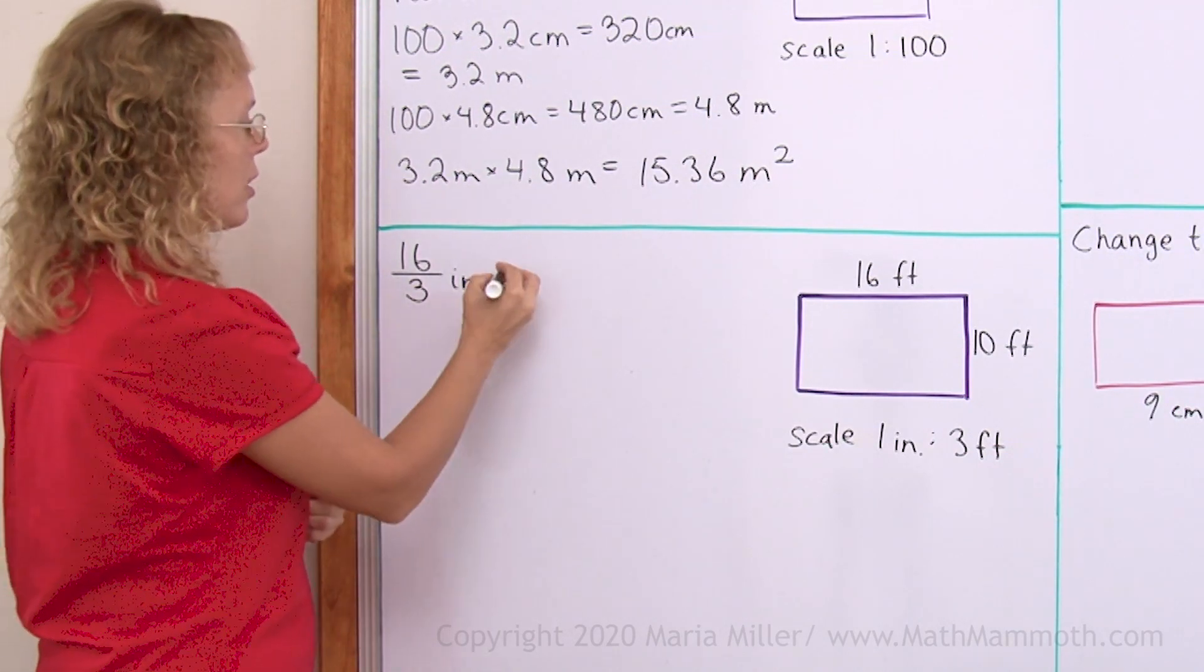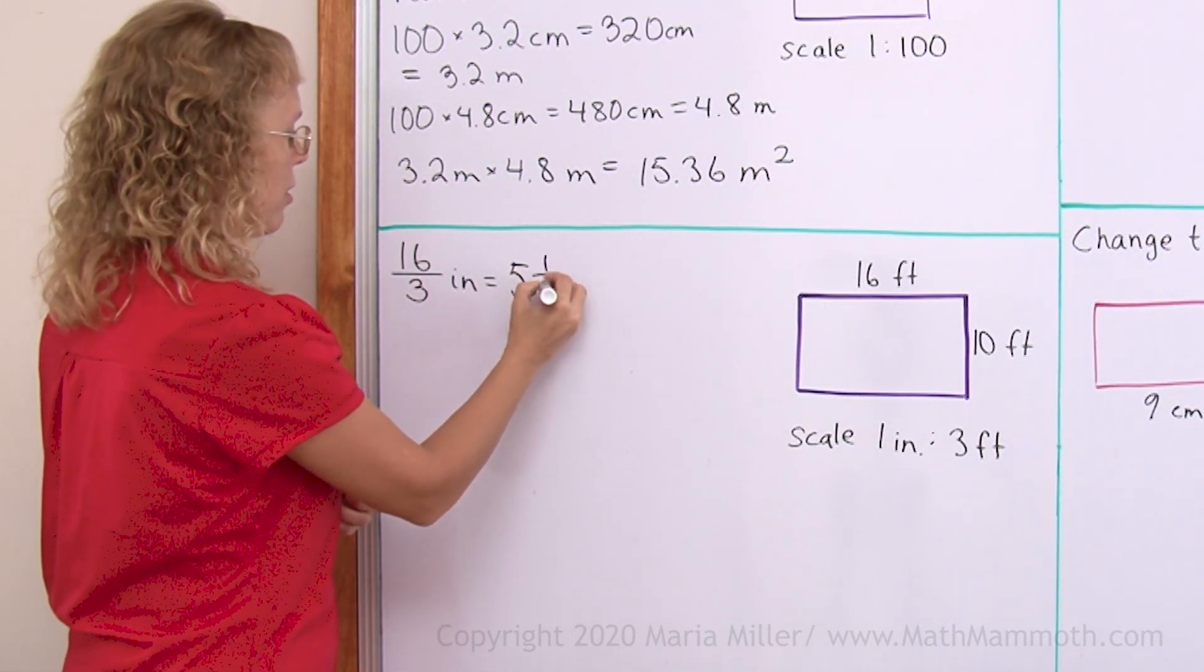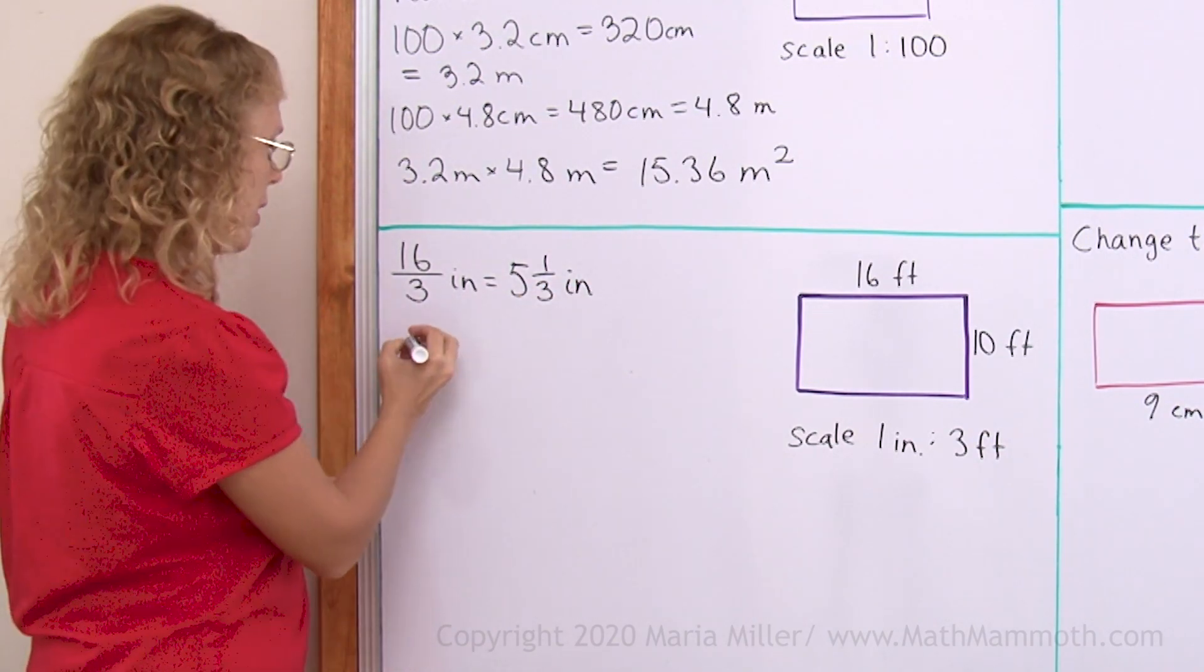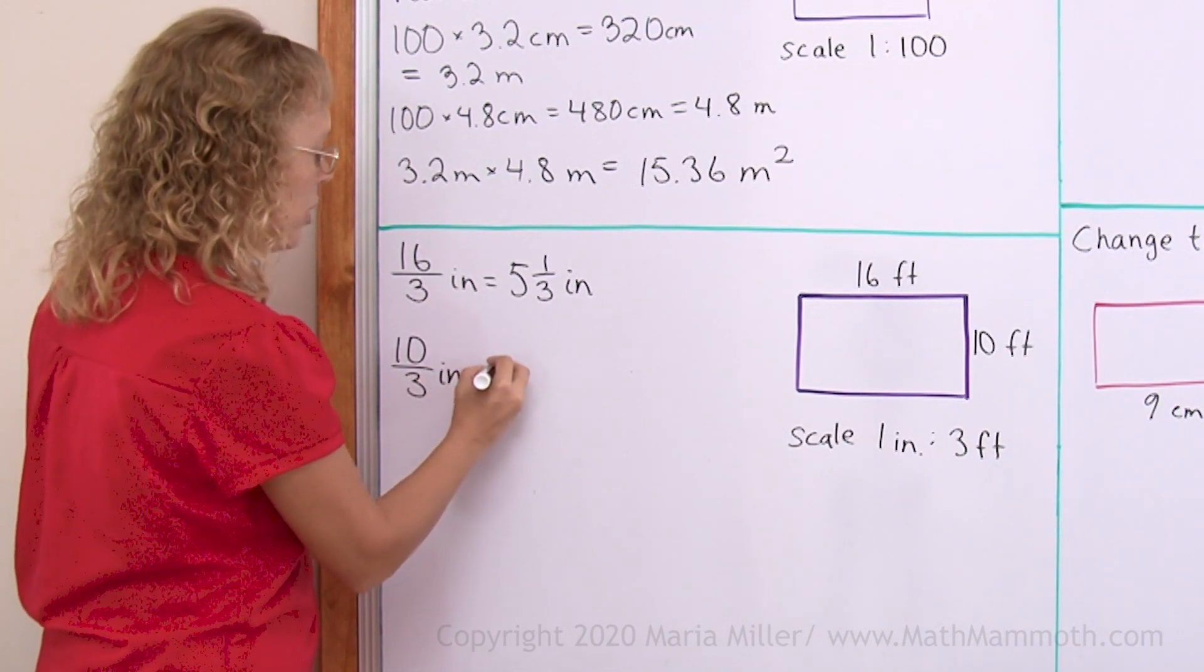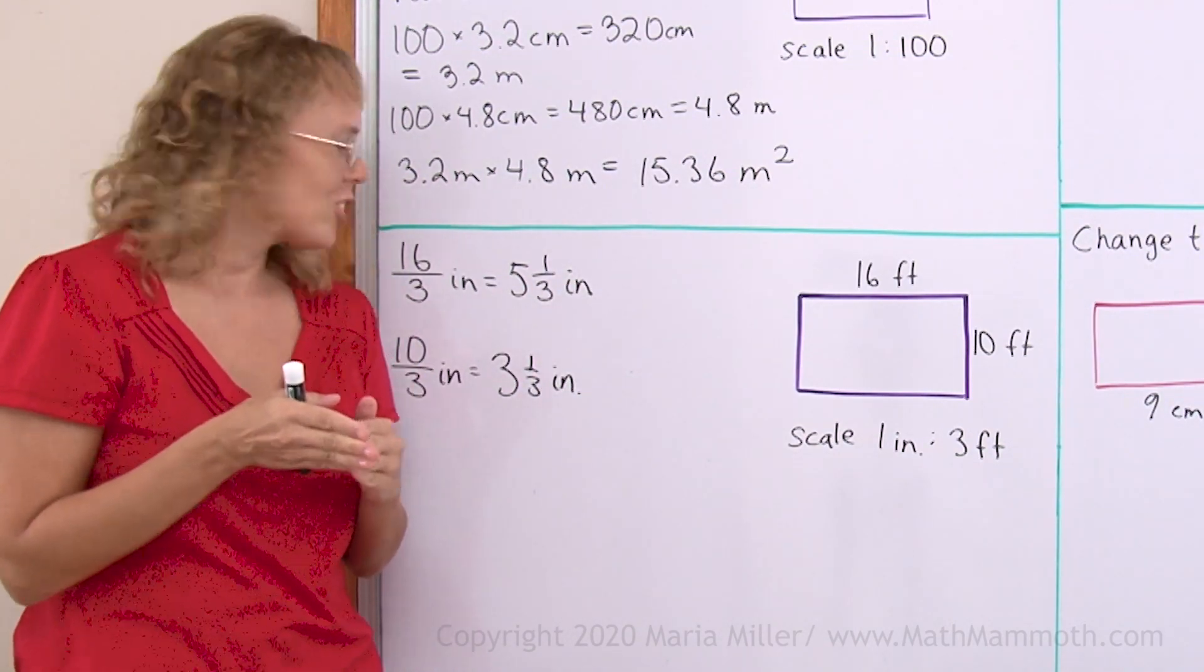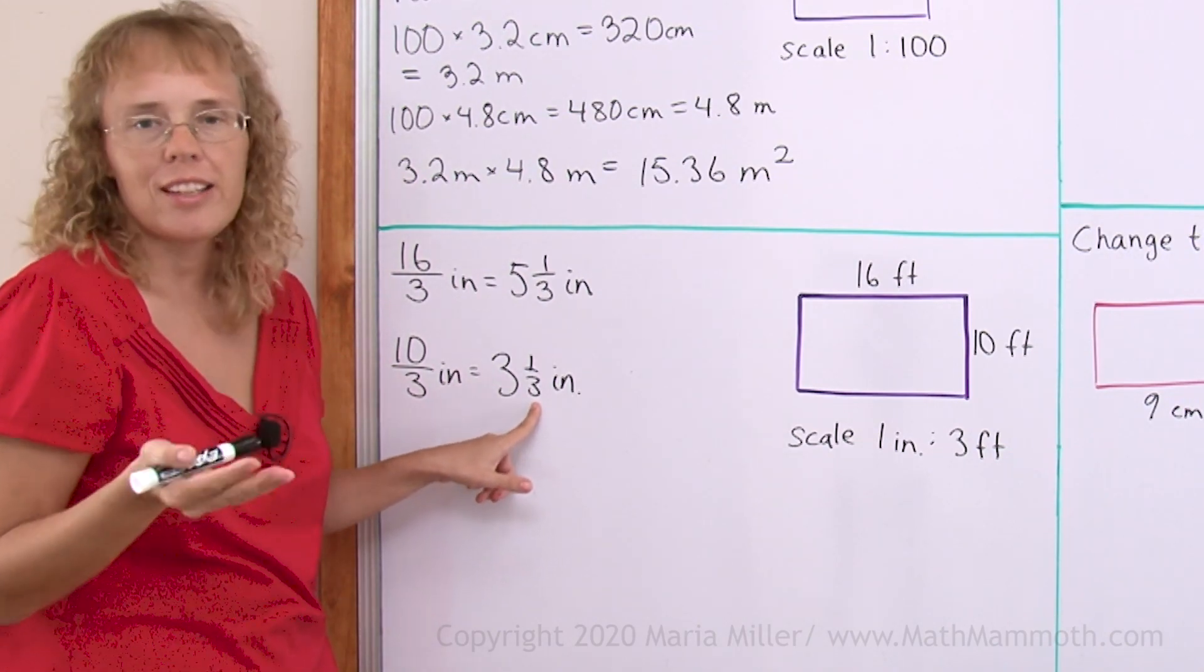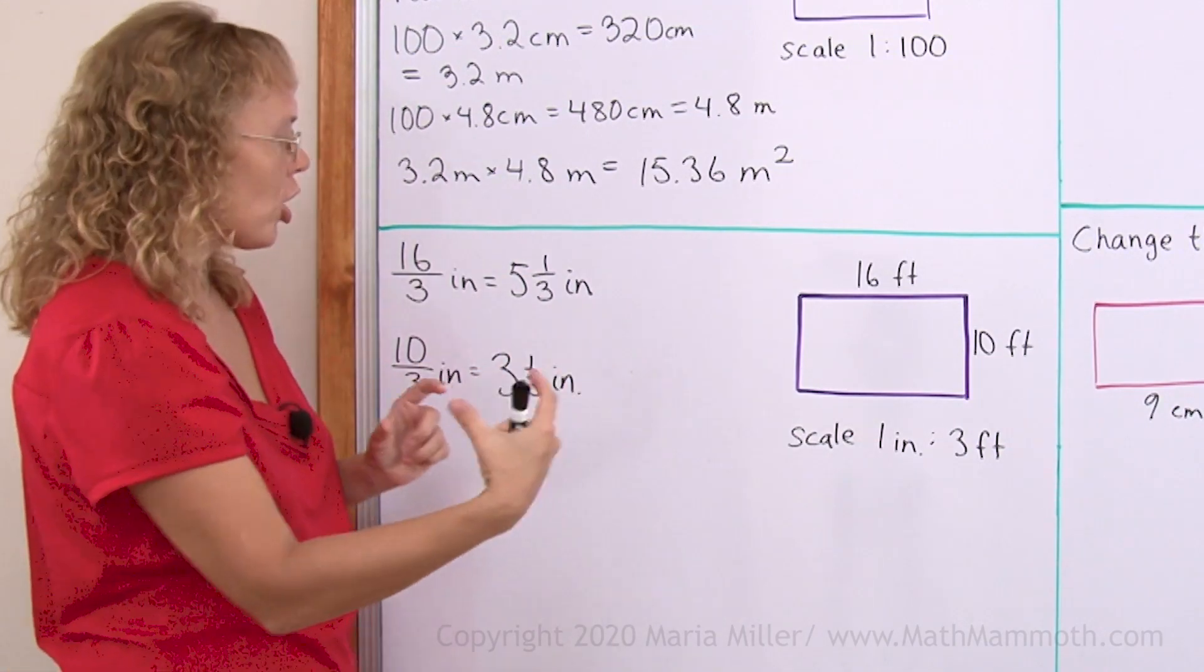And this is a mixed number, it is 5 and 1 third of an inch. And then the other one would be 10 over 3 inches, which is 3 and 1 third of an inch. Now your ruler won't have 1 third of an inch, so you need to choose a fraction that is close to it, such as 3 eighths. 3 eighths of an inch is close to 1 third of an inch, if you're actually drawing it.